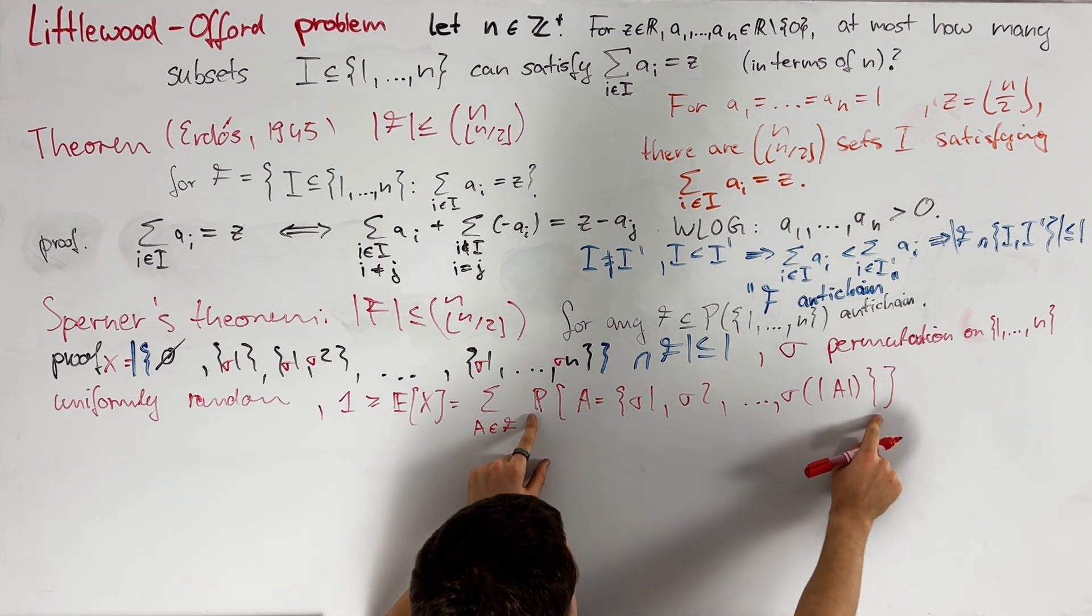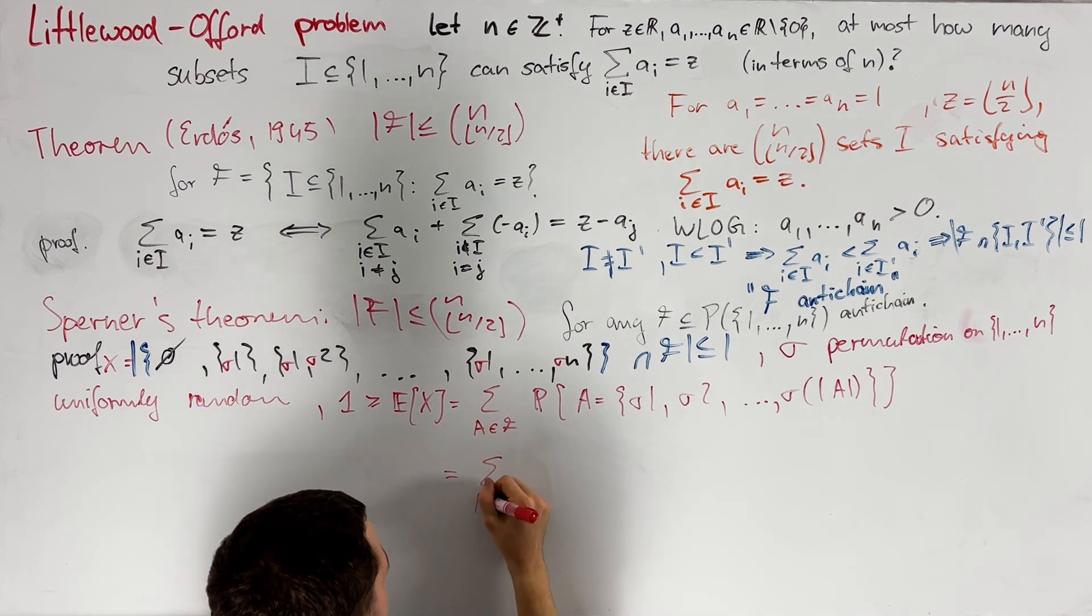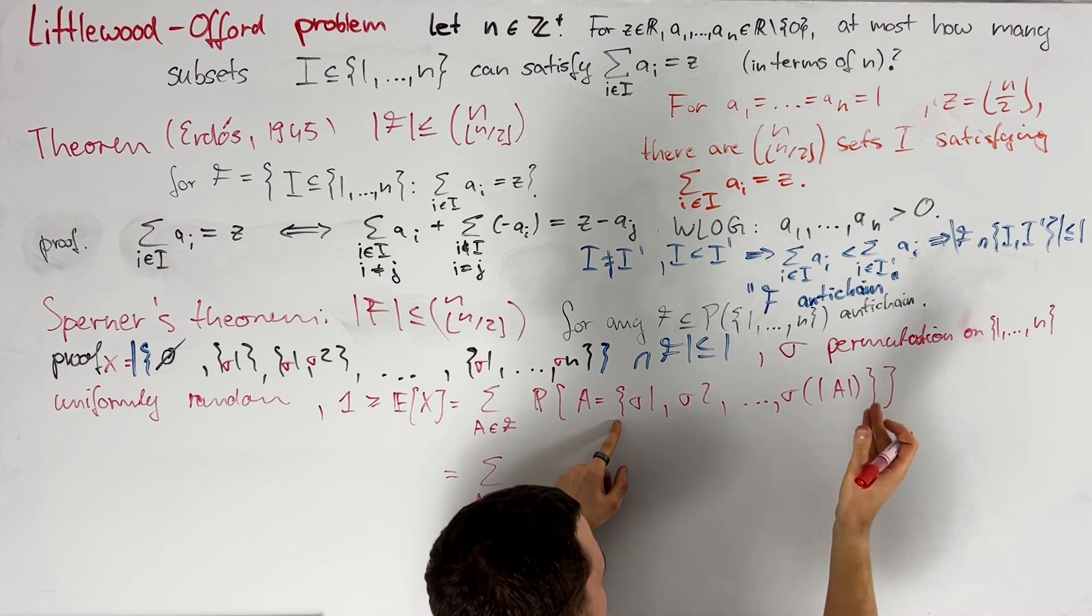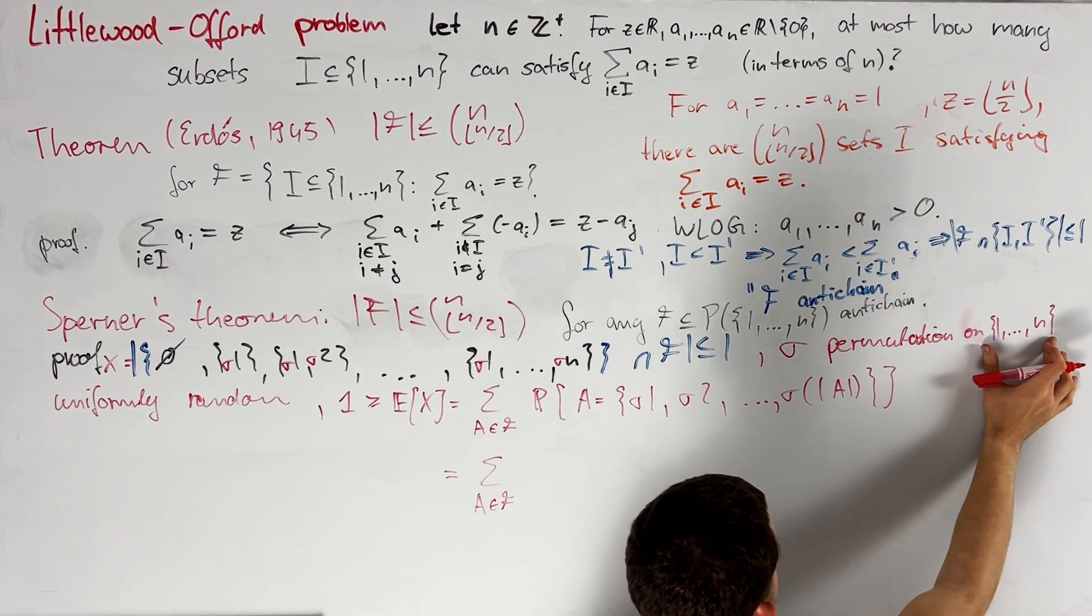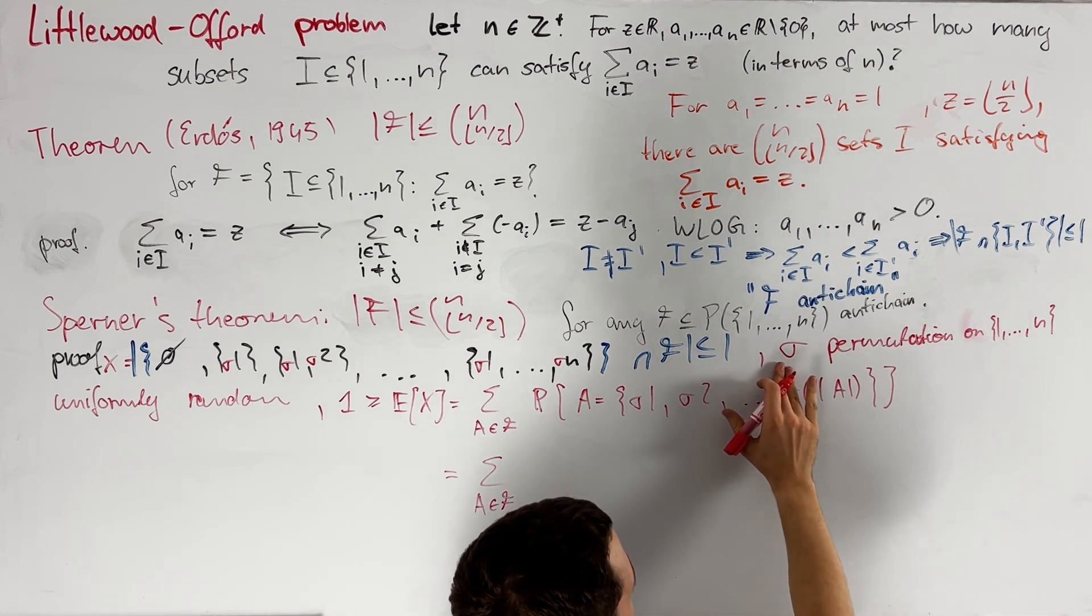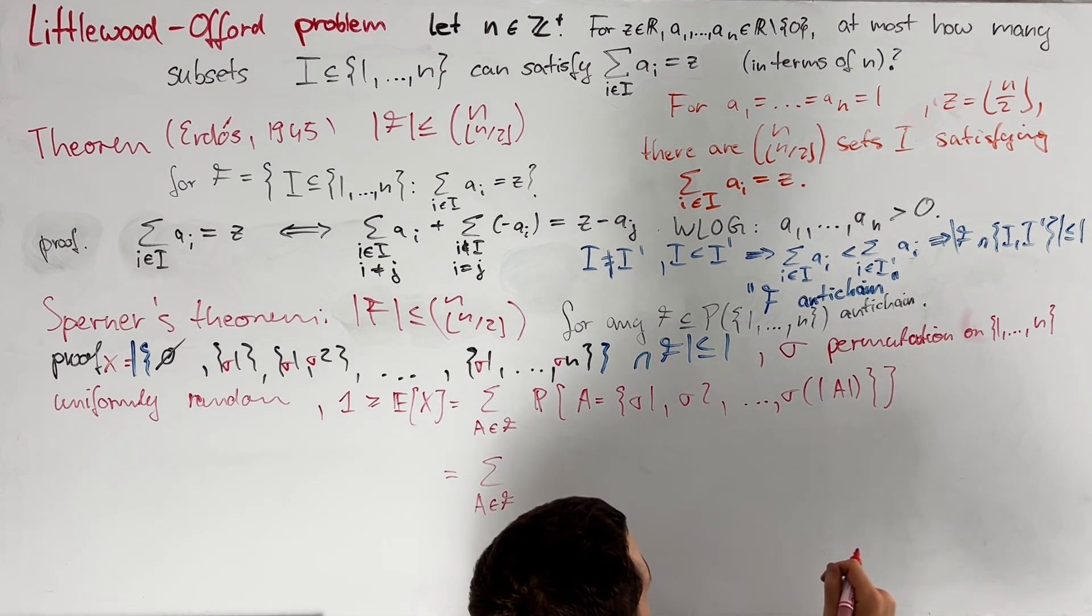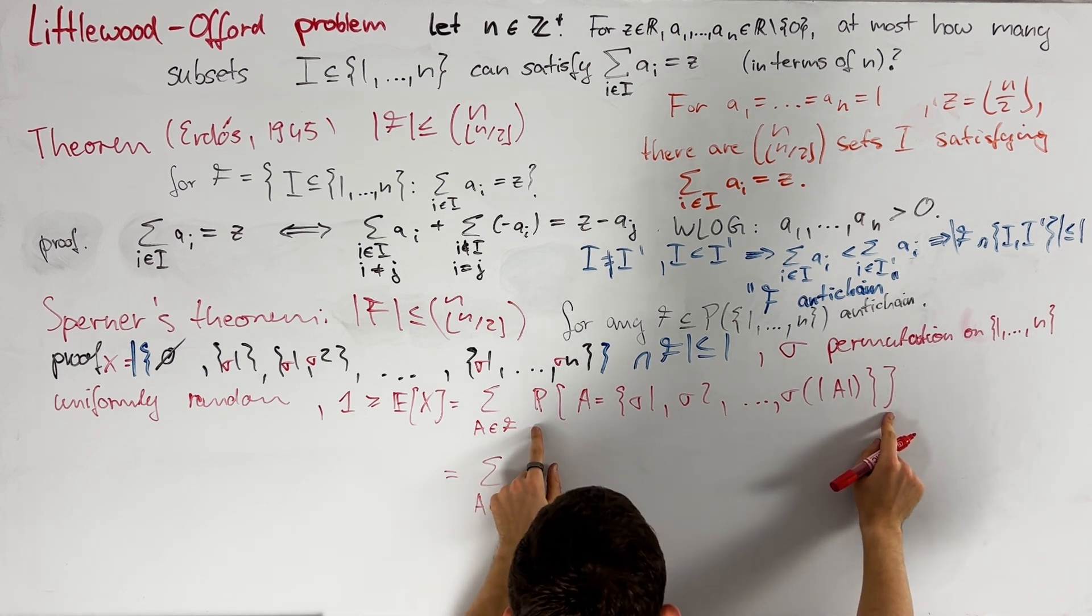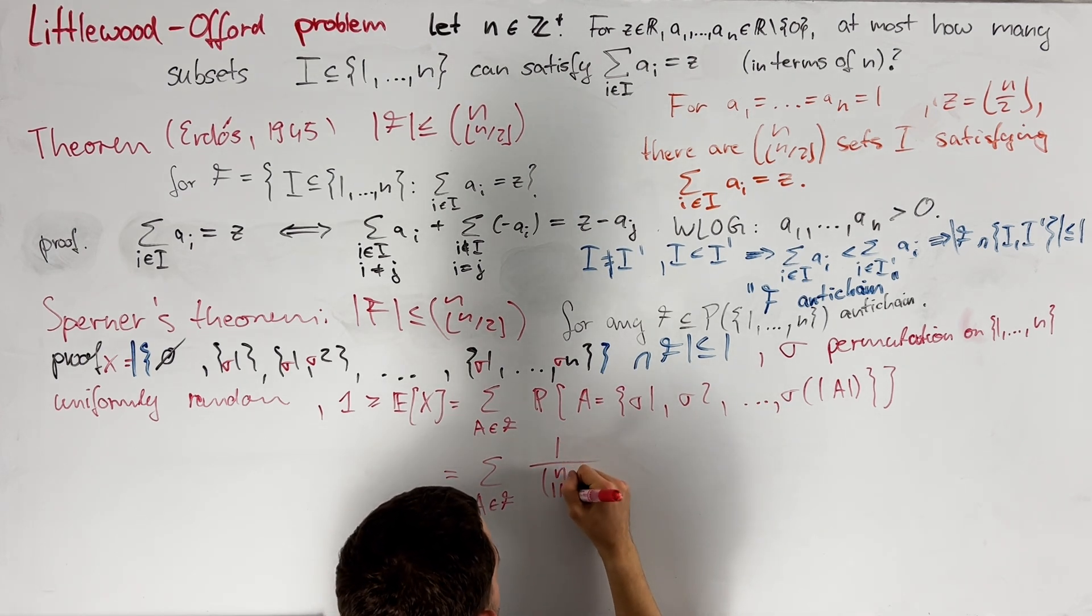Finally, we want to compute this probability. To that end, let us consider any element a in F. The set sigma 1, sigma 2 up to sigma size a has the same size as a, and is a subset of 1 up to n. By symmetry, and since sigma was chosen uniformly, every possibility among those sets is equally likely, and therefore this probability is exactly 1 divided by the number of such sets, which is n choose the size of a.